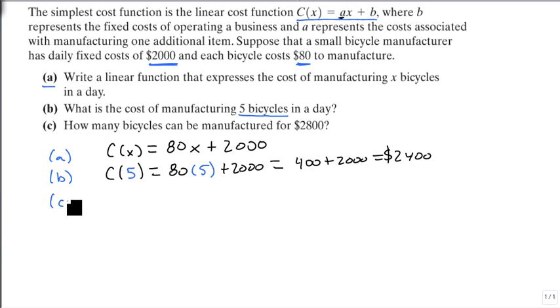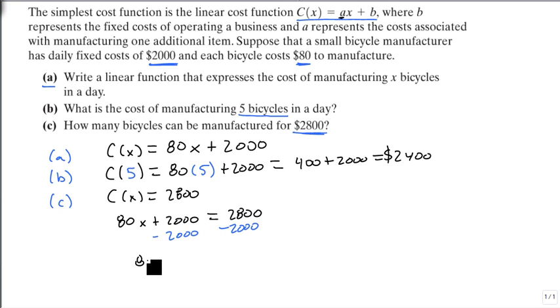The last question is just the opposite. Instead of knowing how many bikes ahead of time and figuring out the cost, I know the cost. We spent $2,800. So C(x) = 2,800, which means 80x + 2,000 = 2,800. Now I have to solve for x. We subtract 2,000 and get 80x = 800. Divide by 80, and we get x = 10.